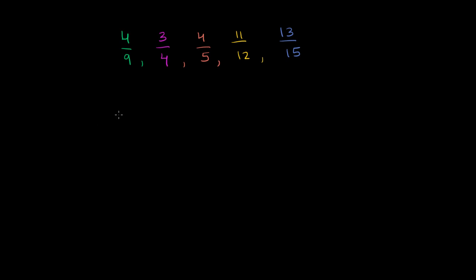There are many ways to do it. You could pick one of these numbers and keep taking its multiples and find the multiple that is divisible by all the rest. Another way is to look at the prime factorization of each of these numbers. The least common multiple will have to have at least all of those prime factors in it. Let's do it that second way.